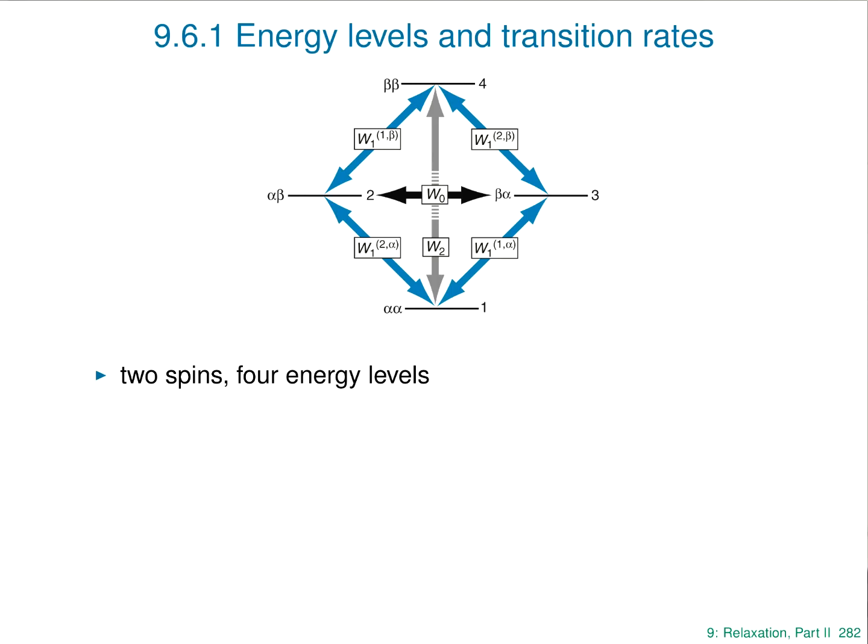If we have two spins, of course we've got four energy levels, just as we had in the very first presentation: alpha-alpha, alpha-beta, beta-alpha, and beta-beta.